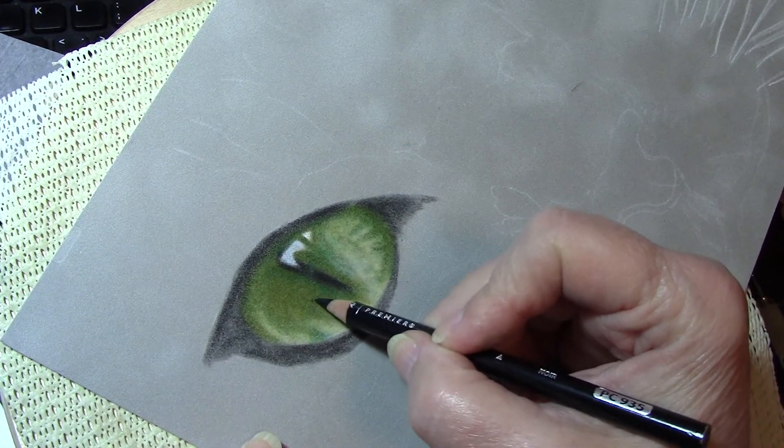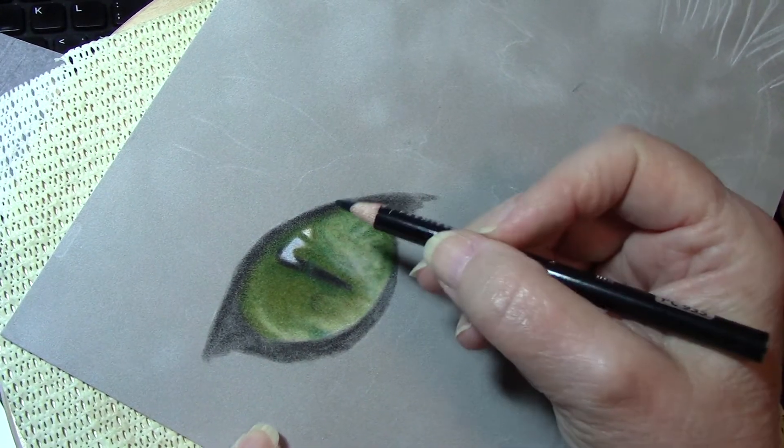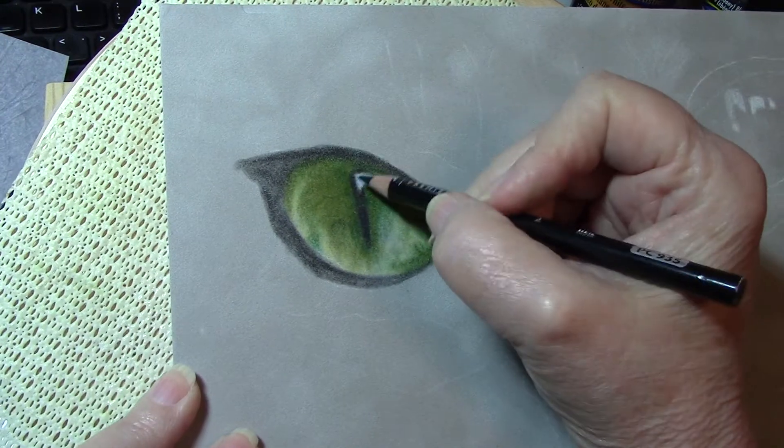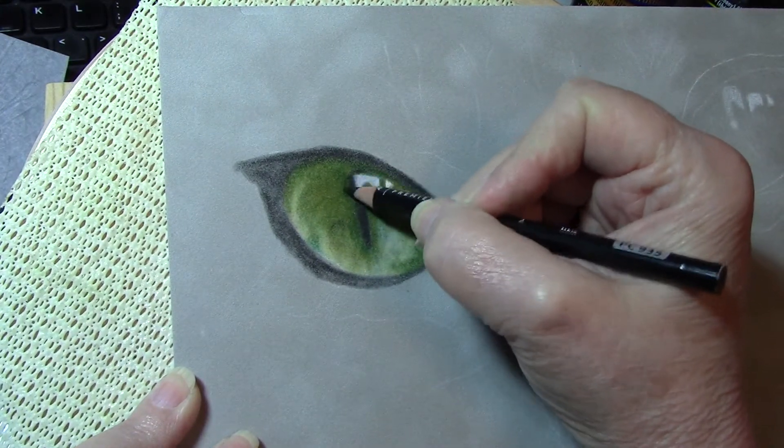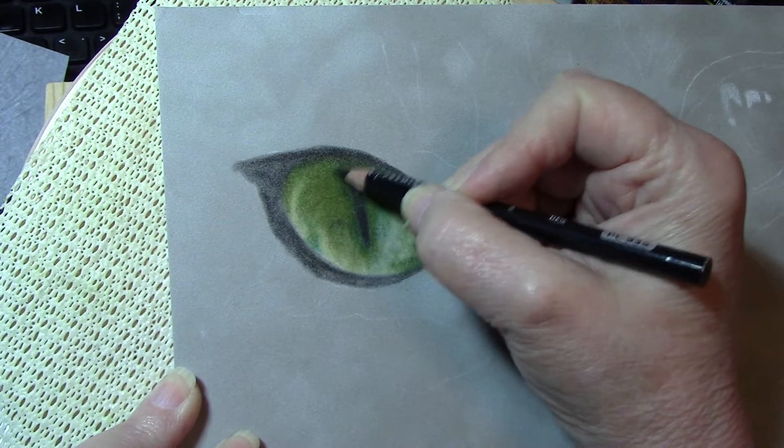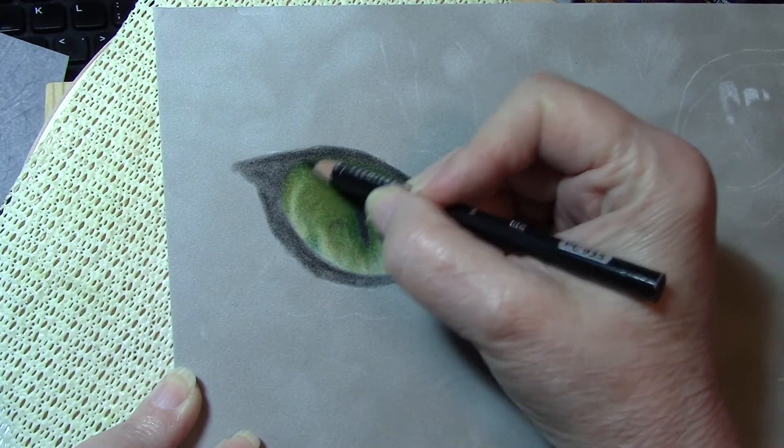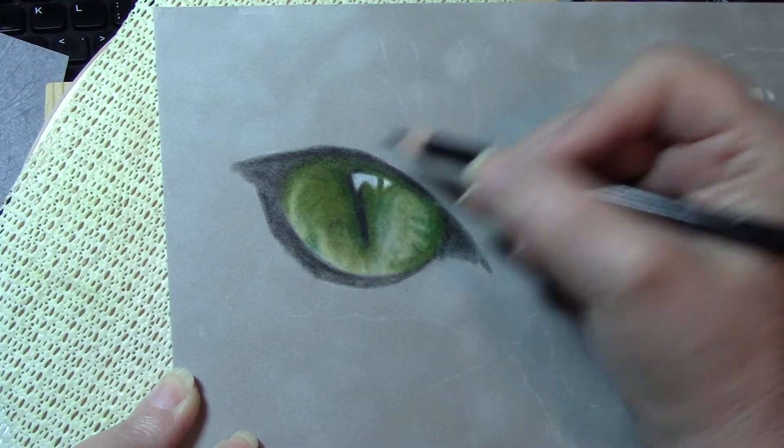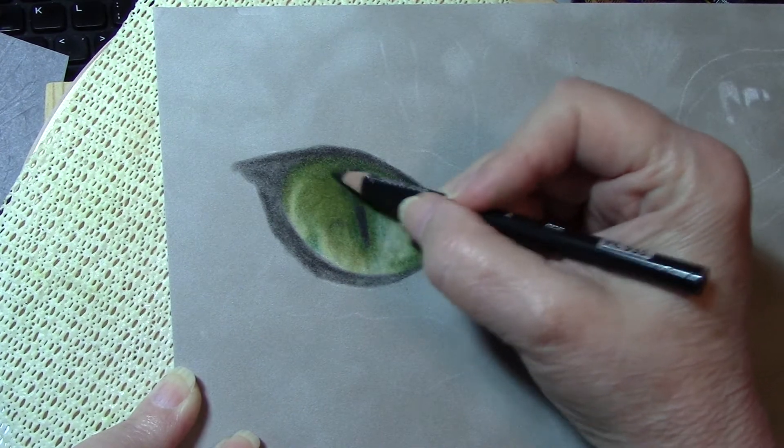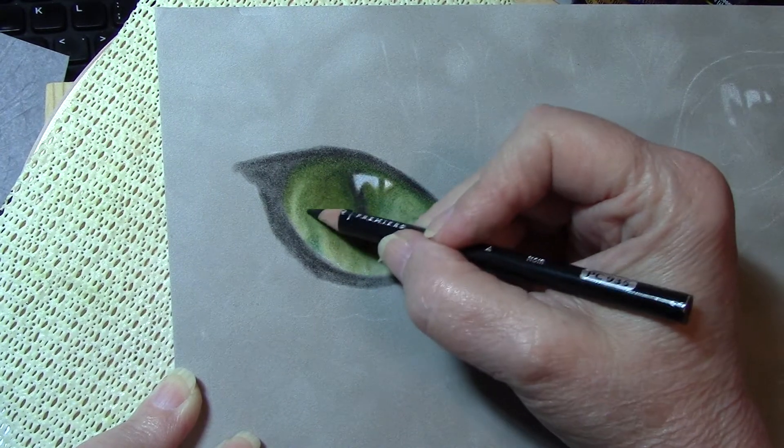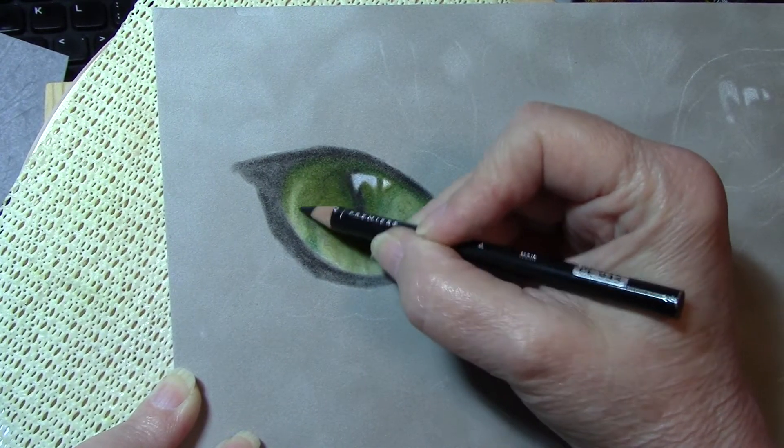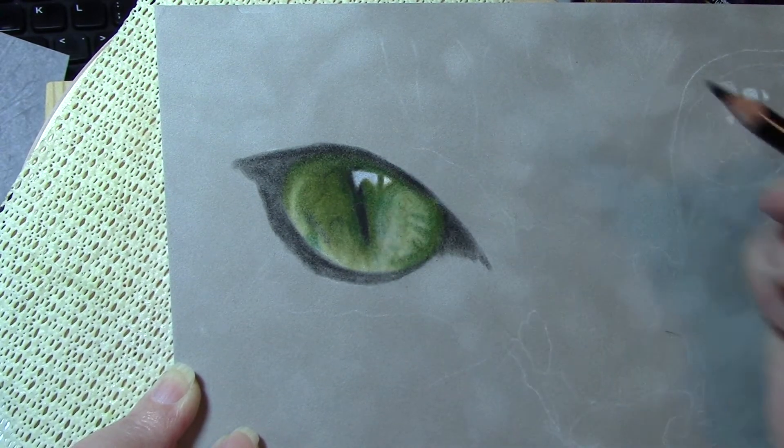I'm going to add just a little bit in little areas, darken up using light pressure. A little darker here, and like I said, this is light pressure. I'm using the black.